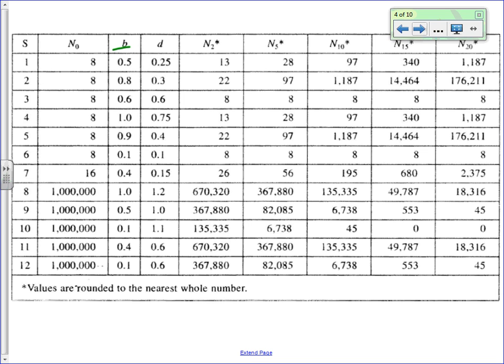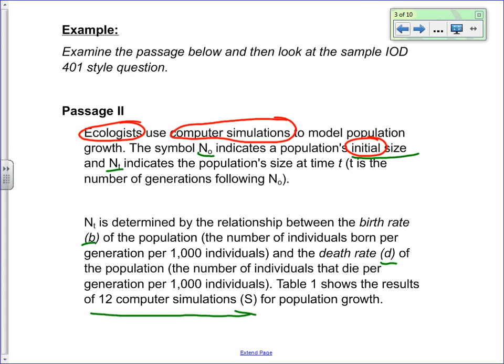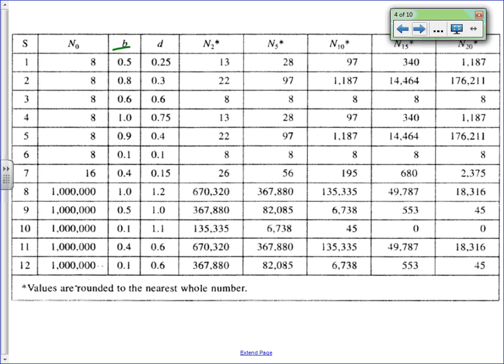The birth rate is how many new organisms are born per every 1,000 per generation. So if the birth rate was 1, that would mean every generation, for every 1,000 individuals, one new one would be born. And D is the death rate — the number of individuals that die per generation per 1,000 individuals.